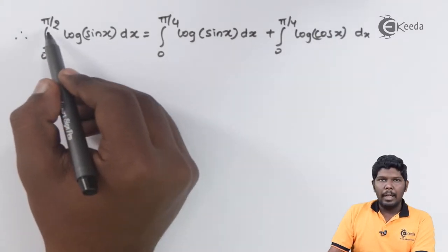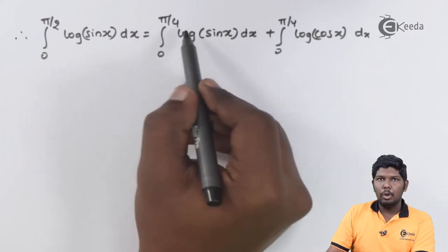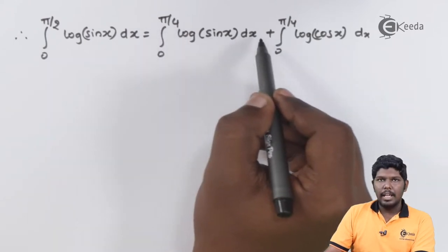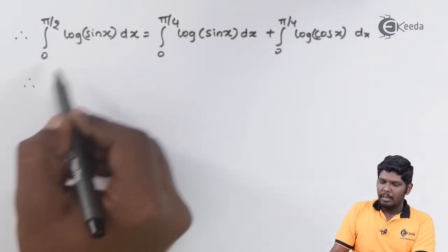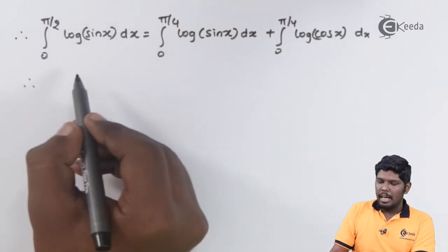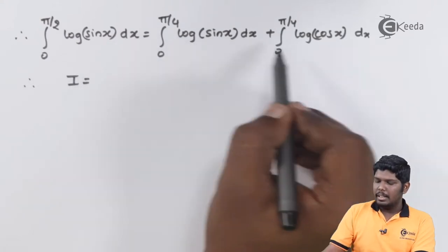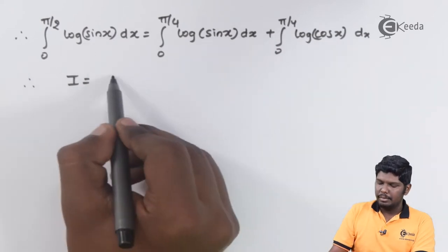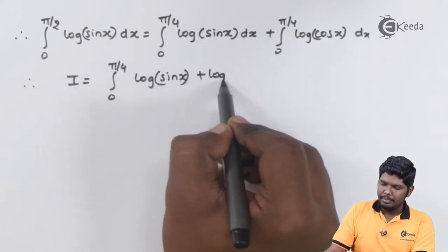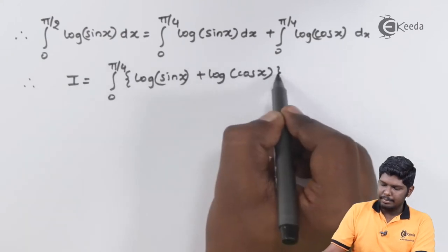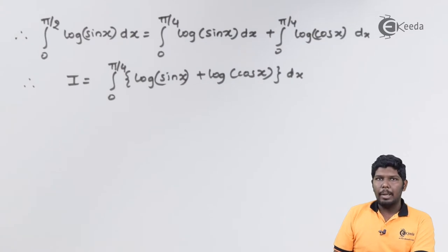Now that a, f(x), and f(2a minus x) are ready, we split the given integral. We have integral from 0 to pi by 2 of log(sin x) dx equal to the integral from 0 to pi by 4 of log(sin x) dx plus the integral from 0 to pi by 4 of log(cos x) dx. We have considered the left-hand side as I. Since the limits are the same, we can add these two integrals.